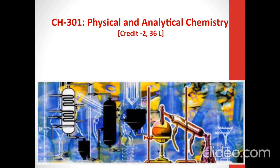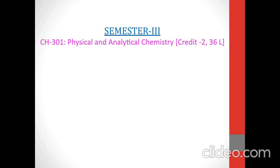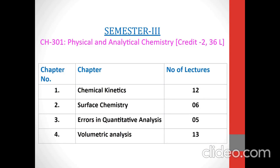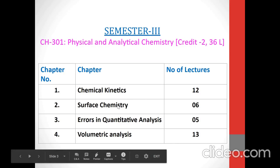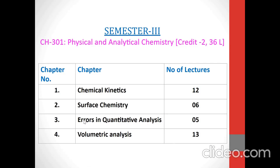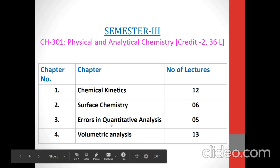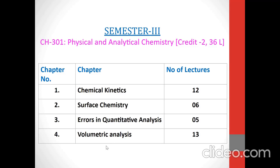For this course, two credits and 36 lectures are allotted for semester 3. The course CH301, Physical and Analytical Chemistry, contains total 4 chapters. Out of these, section 1, Physical Chemistry, has two chapters: Chemical Kinetics and Surface Chemistry. Section 2, Analytical Chemistry, has two chapters: Errors in Quantitative Analysis and Volumetric Analysis. So these are the total 4 chapters in course CH301 for semester 3.